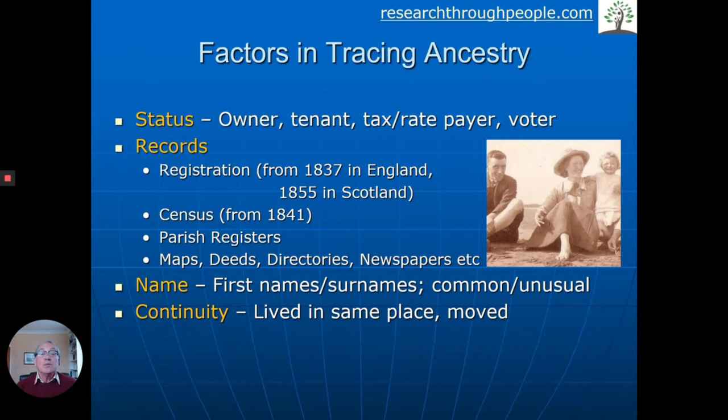Name is clearly important — if we find the name of the person who lived there, it's a starting point, but whether it's common or unusual will influence our research. Finally, continuity: we're looking for someone who did live in that place, but we may find they moved there from somewhere else, and of course they may have moved on, giving us the next resident of that house. I'm going to show you three examples.